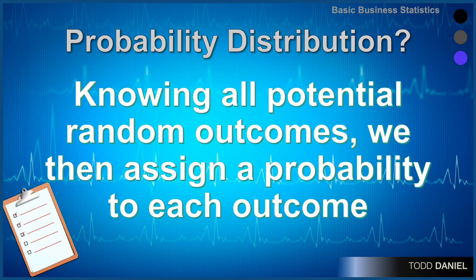When we know all of the potential random outcomes for a probability distribution, we can then assign a probability to each outcome.